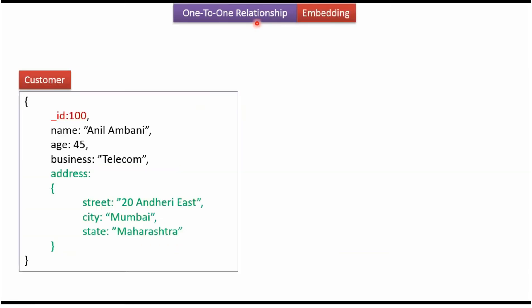Here we will see how to establish one-to-one relationship using the embedding way. Here you can see the customer document. It has underscore_id which is the primary key, name, age and business. It also has an address object, and this address document is the embedded document inside the customer document. This way we can establish one-to-one relationship — one customer has one address.